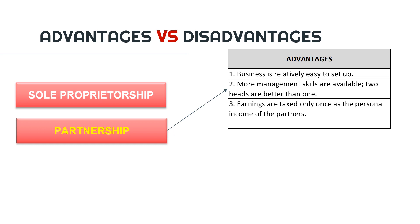What are the advantages and disadvantages of forming a partnership? For advantages, number one: the business is relatively easy to set up, like sole proprietorship. Compared to a corporation, it requires minimal paperwork and legal documents to establish. Number two: more management skills are available — two heads are better than one. With more than one like-minded individual, there are more opportunities to increase their collaborative skill set. People in the partnership can distribute the workload as well. If there are two or more partners, the collaboration can have a greater impact.